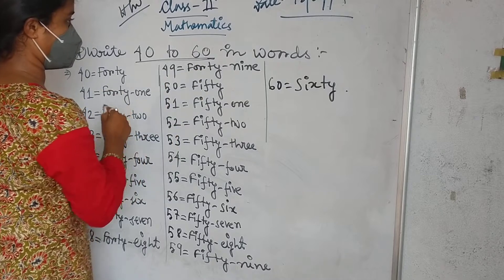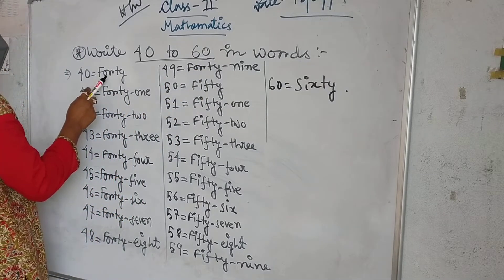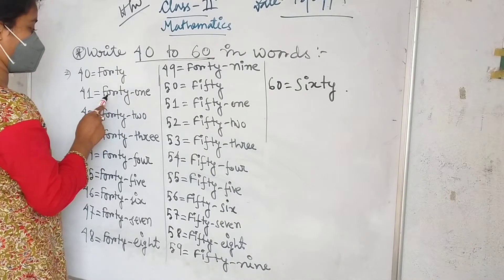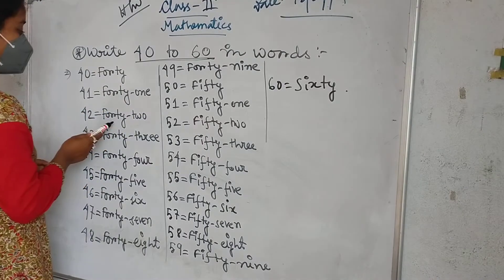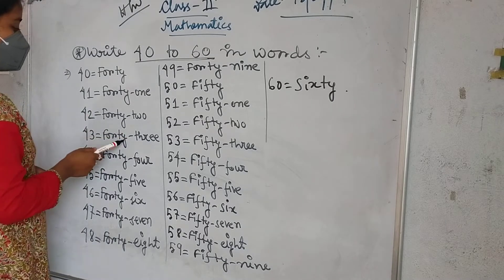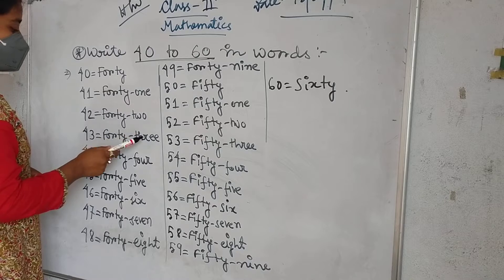So, 40-60, what to write? 40: F-O-R-T-Y, forty. 41: F-O-R-T-Y, forty, O-N-E, one, forty-one. Then 42: F-O-R-T-Y, forty, T-W-O, two, forty-two. Then 43: F-O-R-T-Y, forty, T-H-R-E-E, three, forty-three.